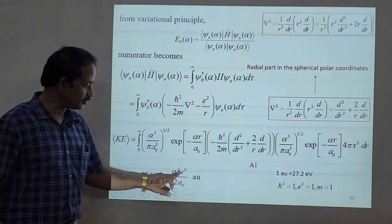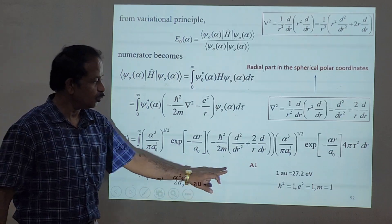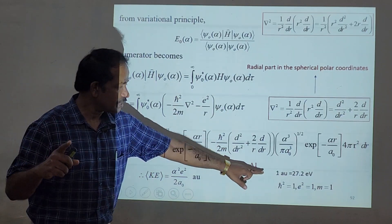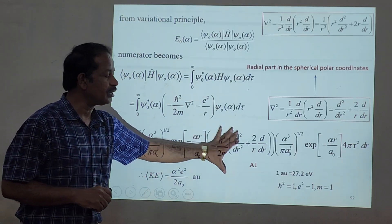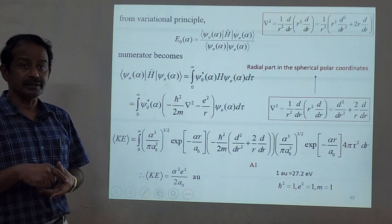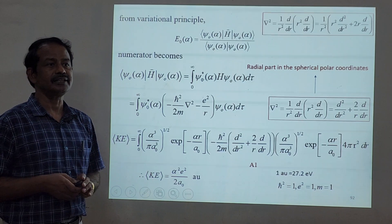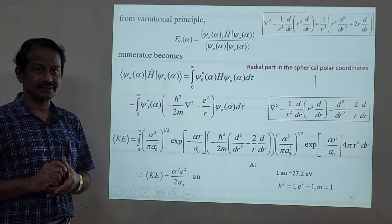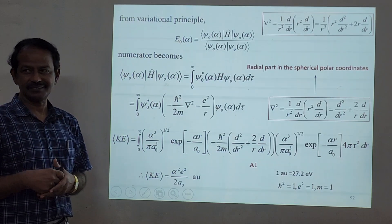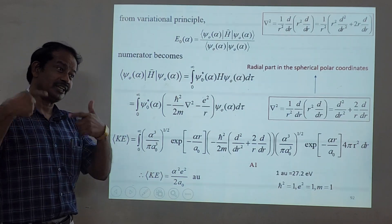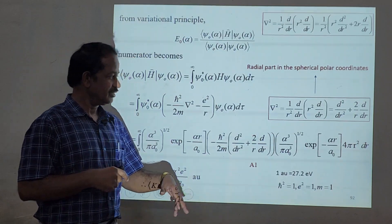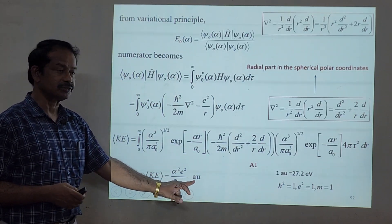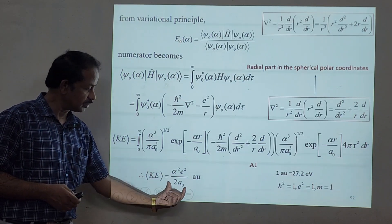The kinetic energy equals α²e²/(2a₀), expressed in atomic units where ℏ²=1, e²=1, and m=1. One atomic unit equals 27.2 electron volts. Using SI units directly is tedious since h = 6.626×10⁻³⁴ J·s and e = 1.6×10⁻¹⁹ C produce very small numbers, so atomic units simplify the calculation. The kinetic energy in atomic units is α²/(2a₀).